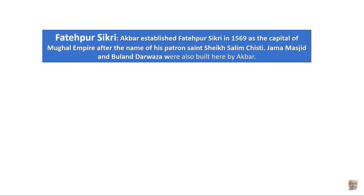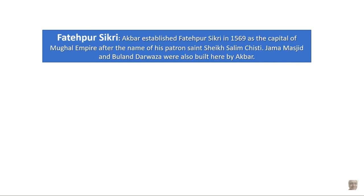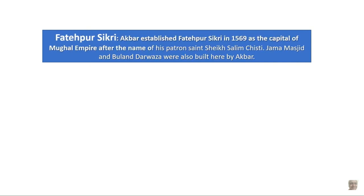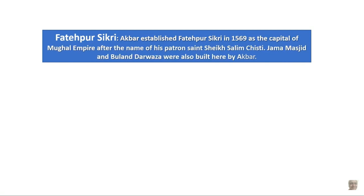Akbar established Fatehpur Sikri after the name of his patron saint, Sheikh Salim Chisti. Jama Masjid and Buland Darwaza were also built here by Akbar.